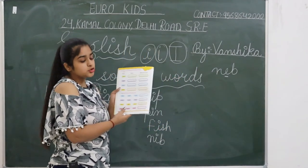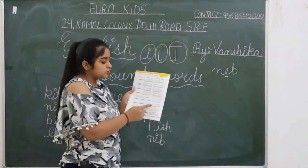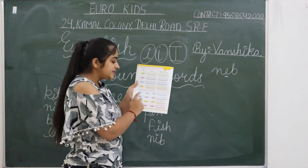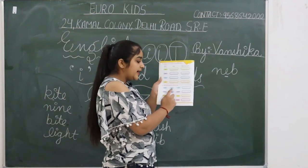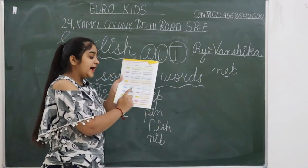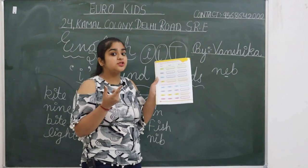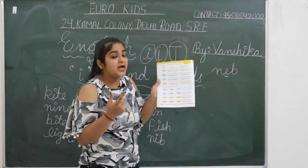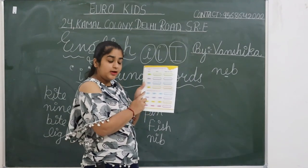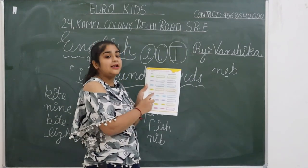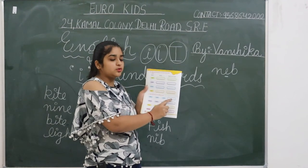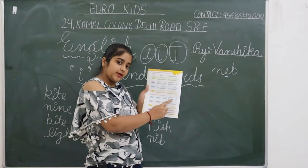Next is: Find and write the odd one out. Read the words and circle the odd one out, then write it. Light, Hide, Side — Hide and Side are the same in pronunciation, they are rhyming words. The odd one out is Light, so circle Light and write it.